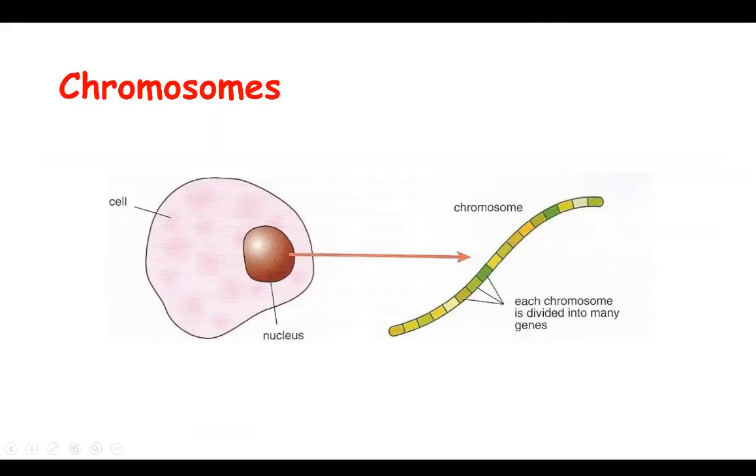This diagram just shows the same thing that we've just talked about. We've got the cell with the nucleus in it. Within the nucleus we've got chromosomes, and each chromosome is divided into many genes. Now genes are short lengths of DNA which code for proteins. Basically, the genes code for proteins, and then the proteins determine your characteristics. Depending on what proteins are produced, that's what that cell will do.